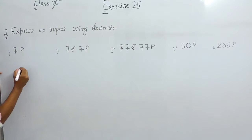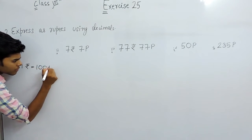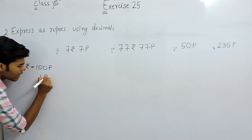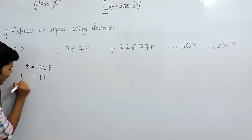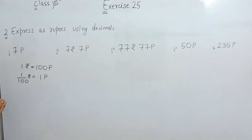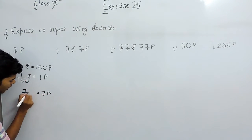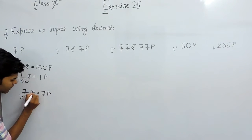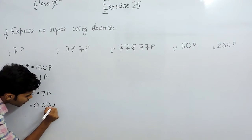The simplest way is that we know 1 rupee is equal to 100 paisa. Therefore, 1 paisa will be equal to how much? That will be 1 upon 100 rupee. This is equal to 1 paisa, means 1 upon 100 rupee. So, now 7 paisa will be 7 upon 100 rupee and that will be 0.07 rupee.